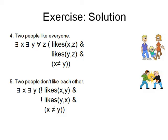And the next one, two people like everyone. That means there are two people x and y, and they like every z. X likes z and y likes z, and x is not equal to y. So they are two different people.